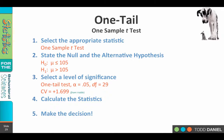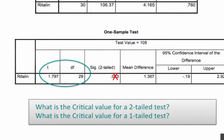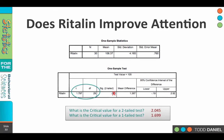Now we calculate the statistics using SPSS, and the t-value we get is 1.797 with 29 degrees of freedom. Let's look more closely at this value. Notice the SIG two-tailed number — go back to your t-table and look up the critical value for a two-tailed test with df = 29, and for a one-tailed test with df = 29. For the two-tailed test, the critical value is ±2.045; for the one-tailed test, it's 1.699.